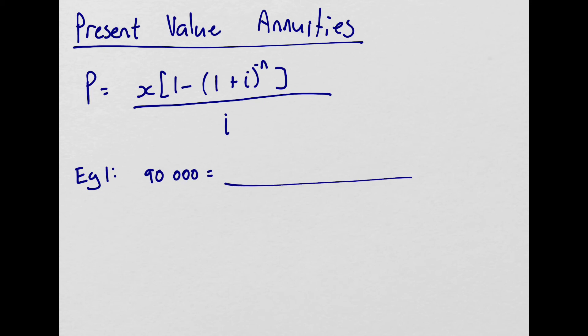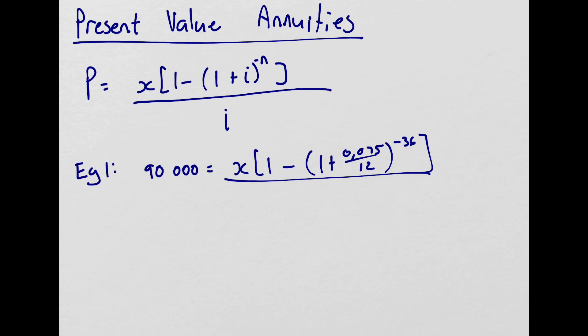90,000 is the value of the loan, so that's our P value. The question was to solve for the monthly payment. So we're solving for X. 1 minus 1 plus, and then the interest rate is given as 7.5% compounded monthly. So it'll be 0.075 compounded monthly. And then to the power of negative 36. It's negative N. It needs to be negative 36 because it's a three-year repayment period, and there are 12 months in a year of monthly payments.